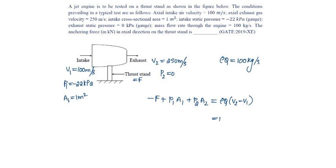Rho Q is 100 into V2 is 250 minus V1 is 100, which will be equal to minus F plus P1 is minus 22 into area is 1. P2 is 0, from which F will be equal to 37,000 newtons, that is 37 kilonewtons.